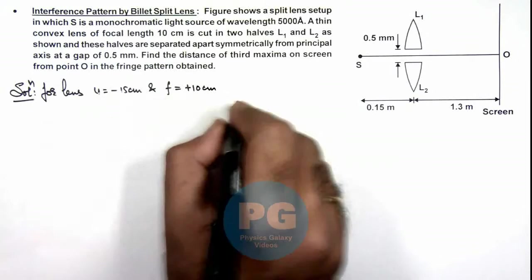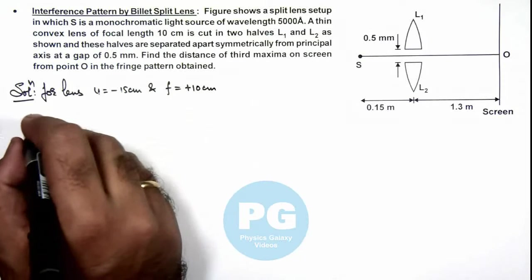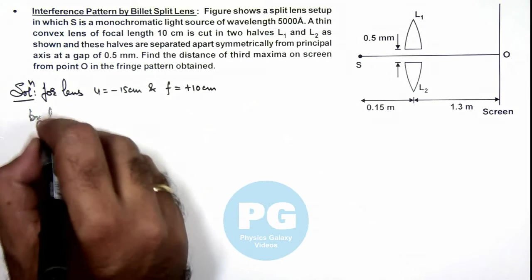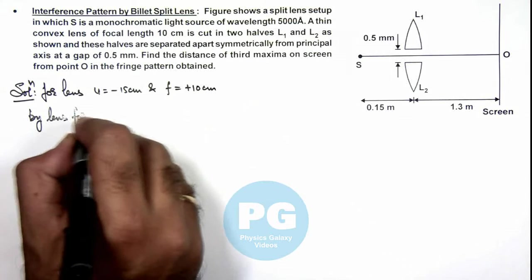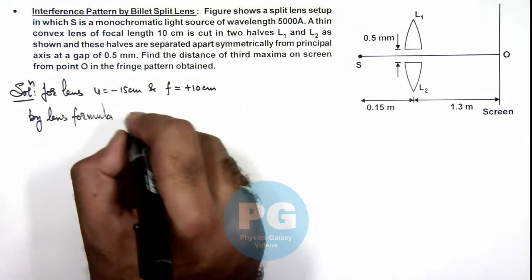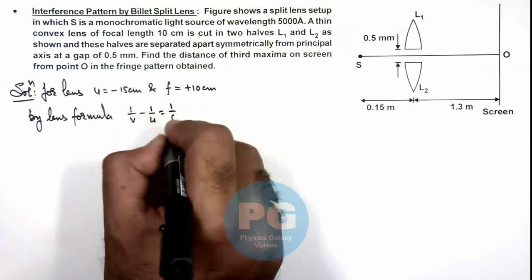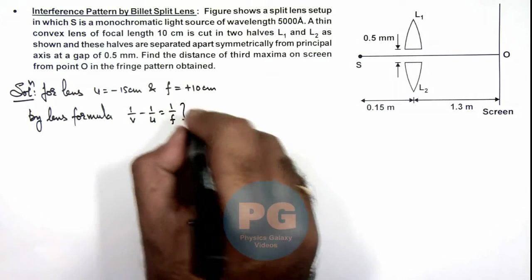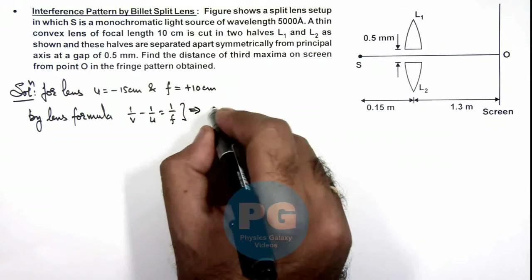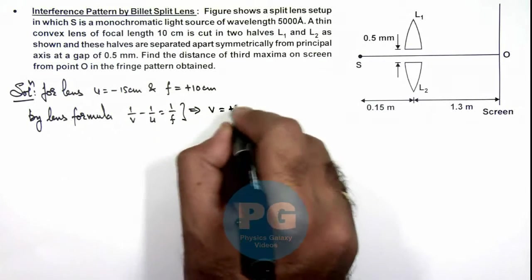Using the same in lens formula, we can write by lens formula: 1/v - 1/u = 1/f. On substituting the values of u and f here, we get the value of v to be plus 30 centimeter.